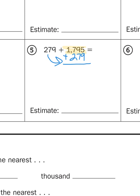Now, before I do that, I need to come up with an estimate. So again, I'm going to think about rounding. Now, you'll notice I have a number in the thousands and a number in the hundreds. 279 would not round up to 1,000. So it would make more sense for us to round both numbers to the nearest hundred.